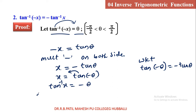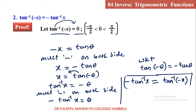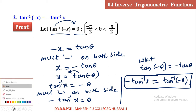Multiplying minus on both sides: minus tan inverse x is equal to plus theta. Replacing theta as tan inverse of minus x, we have proved that tan inverse of minus x is equal to minus tan inverse x. This is also a very important property. Please remember the proof. Like this, we will prove the next result also.